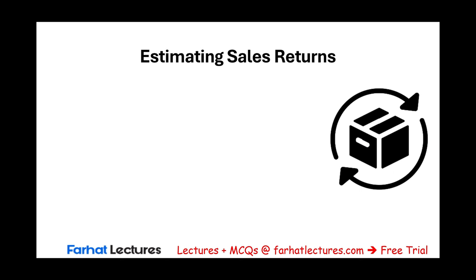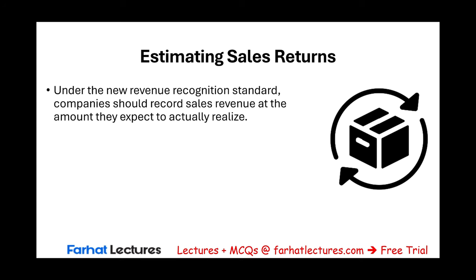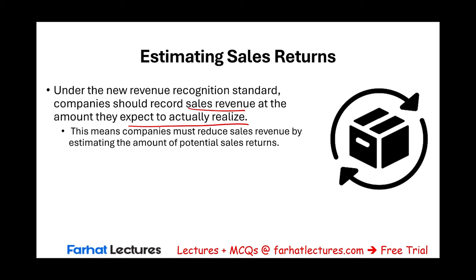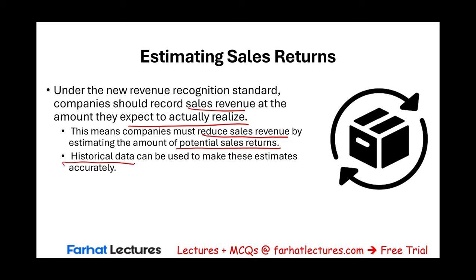Under the new revenue recognition standard, companies must record sales revenue at the amount they expect to actually realize. This means reducing sales revenue by estimating potential sales returns upfront. Using historical data — for example, if 5% of sales are returned on average — we estimate 5% returns for every sale made.